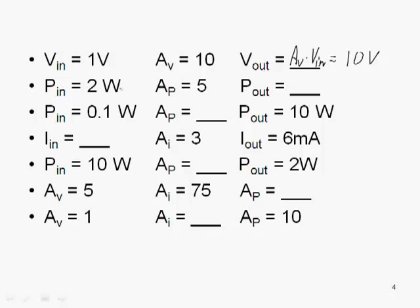In this example, if we've got an input power, the signal power is two watts coming into the amplifier. The amplifier has a gain of 5. The output power is going to be equal to the power gain times the input power, so that's 5 gain times 2 watts gives us 10 watts at the output.